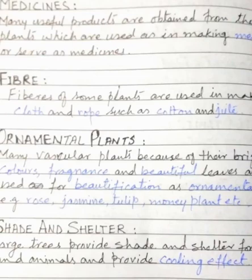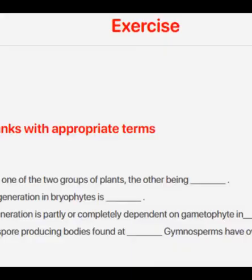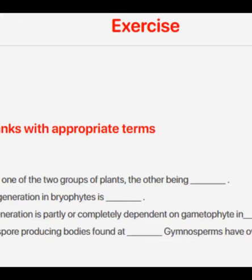These 10 questions are done, and the last two are from the exercise: fill in the blanks and MCQs. Write the correct answers in the book with pencil and in your copy. Fill in the blanks answers: number one — bryophytes are one of the two groups of plants, the other being tracheophytes. Number two — the dominant generation in bryophytes is gametophytes.